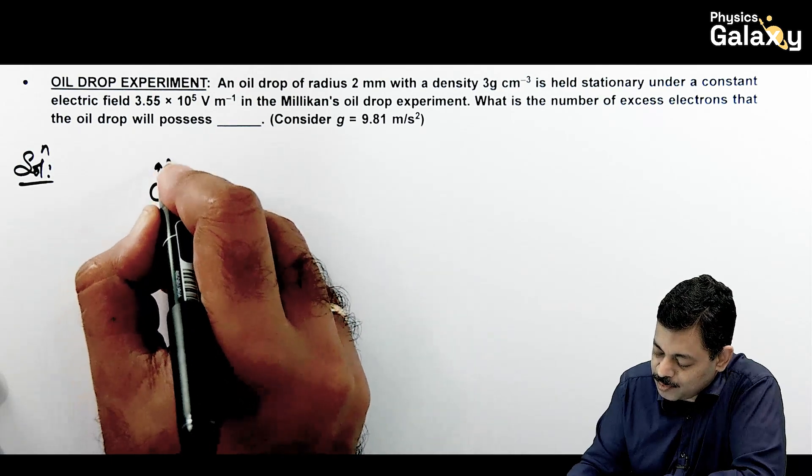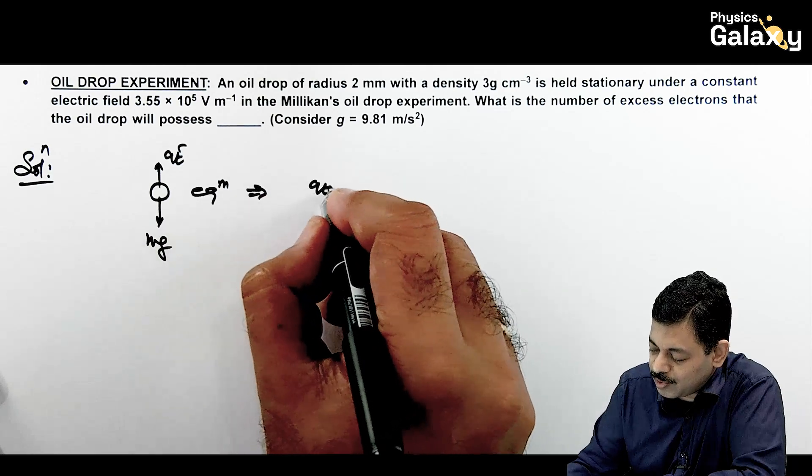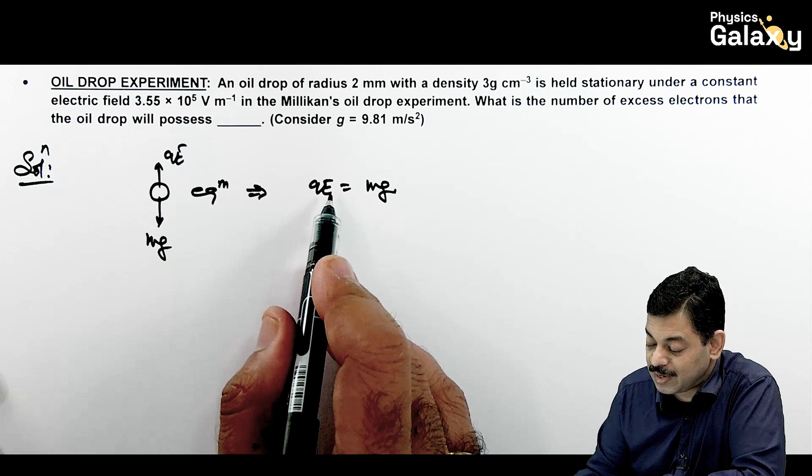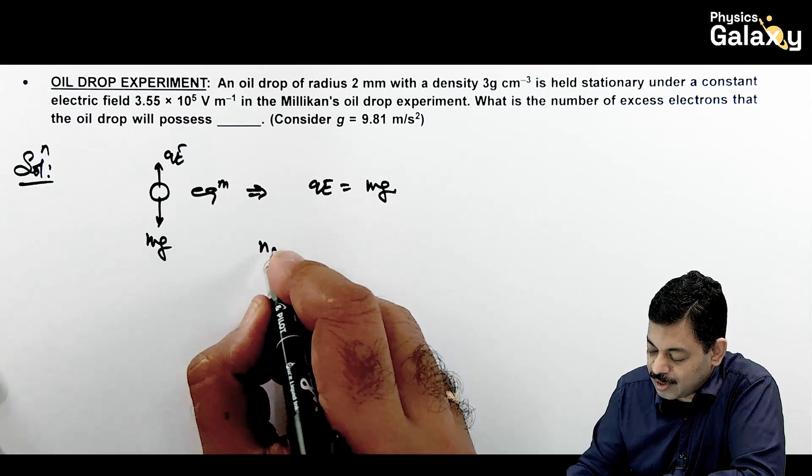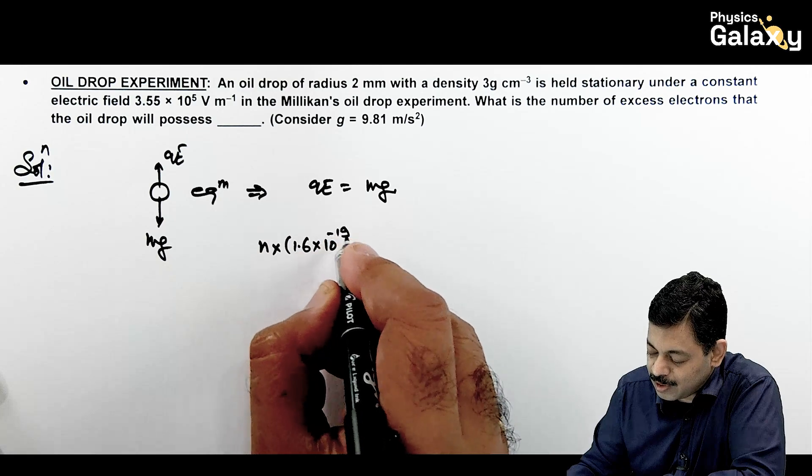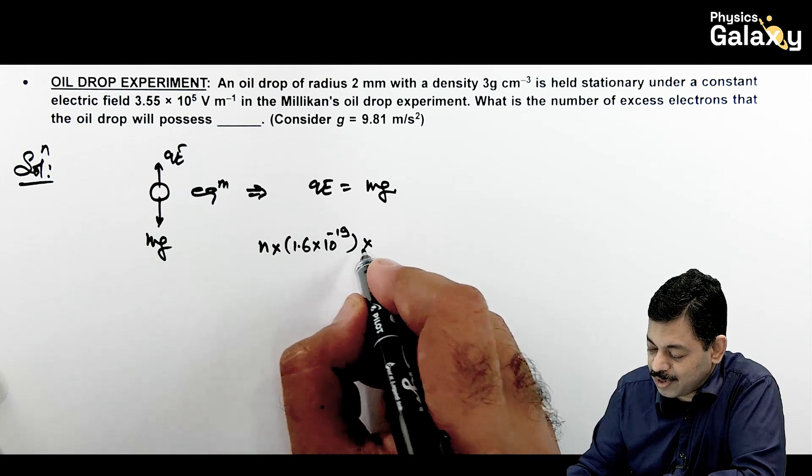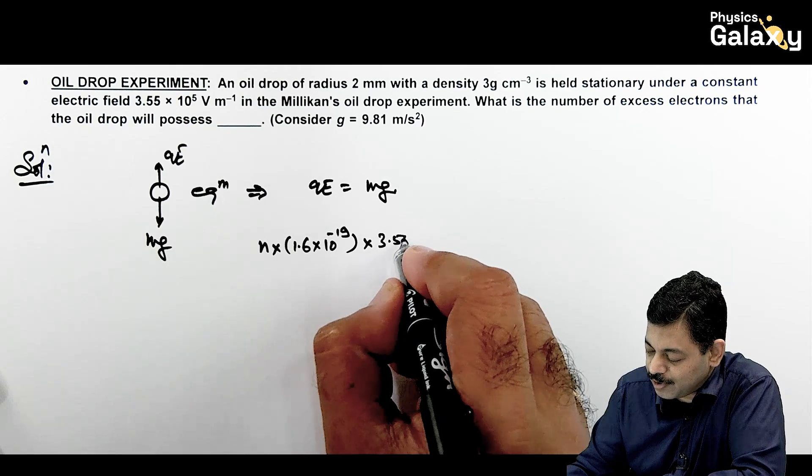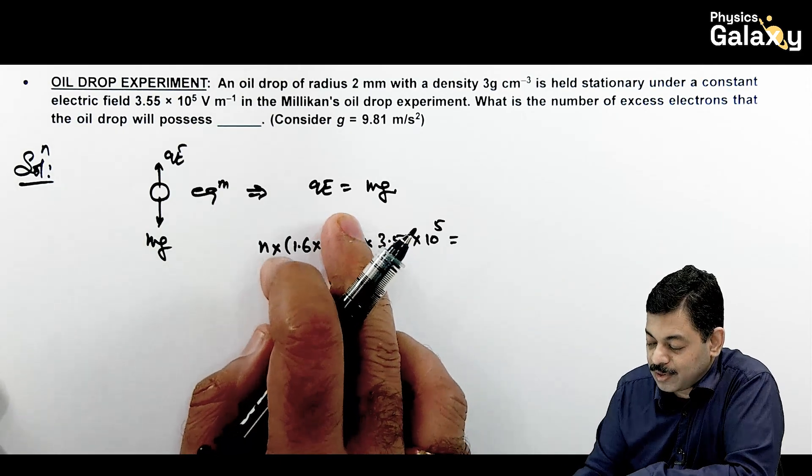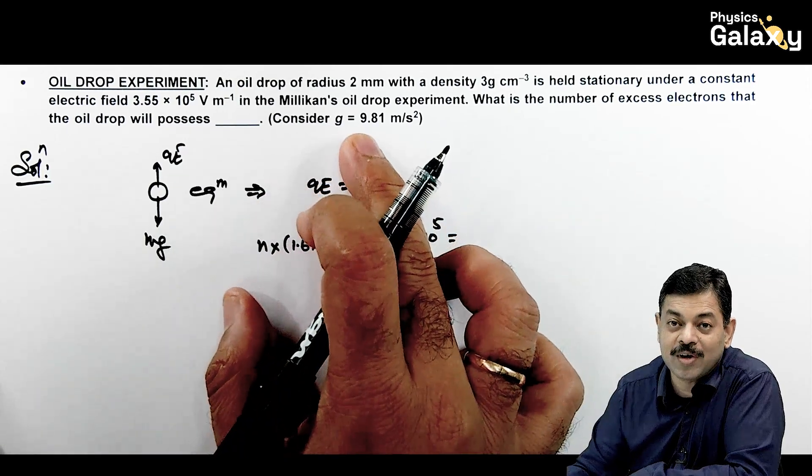So here you can write, when an oil drop is in equilibrium, upward electric force will be there, QE, downward force will be Mg, and for equilibrium we can write QE equals Mg. So in this situation, charge can be written as Ne, so charge you can write as N multiplied by e is 1.6 into 10 to power minus 19. If N are the excess electrons, then Ne will be the charge on it. Electric field here is 3.55 into 10 to power 5. This QE should be equal to Mg, in this case g we need to take 9.81.